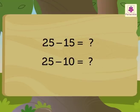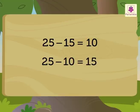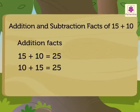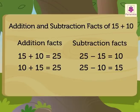Now, let us subtract. Keeping the minuend the same, that is 25, and changing the subtrahend, let us write the subtraction statements. 25 minus 15 is equal to 10. 25 minus 10 is equal to 15. So, here we got our two addition and two subtraction facts: 15 plus 10 is equal to 25, and 10 plus 15 is equal to 25.